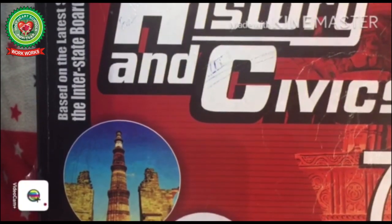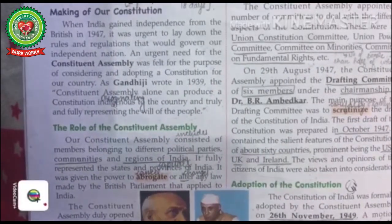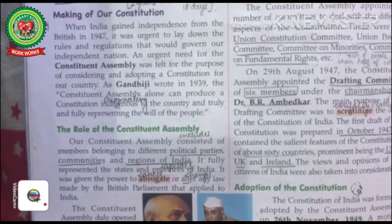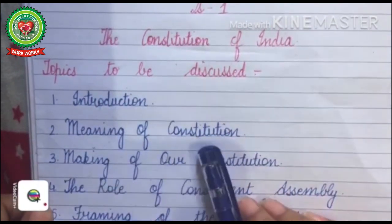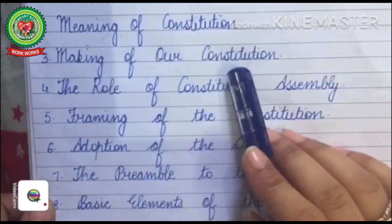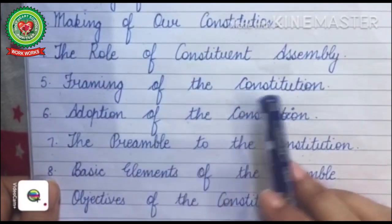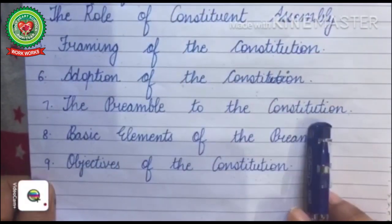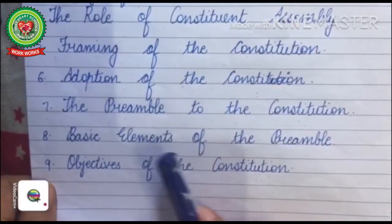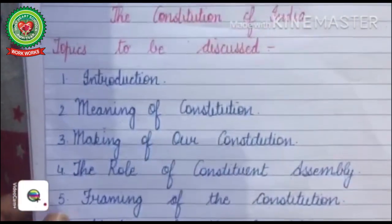Good morning students. Take out your History and Civics book, Class 7th. Yesterday we started with the new lesson of Civics — Lesson Number One: The Constitution of India. The topics to be discussed in this lesson are: its introduction, meaning of Constitution, making of our Constitution, the role of Constituent Assembly, framing of the Constitution, adoption of the Constitution, the Preamble to the Constitution, basic elements of the Preamble, and objectives of the Constitution.